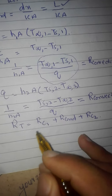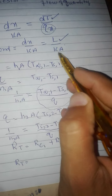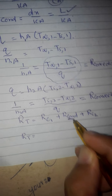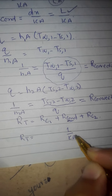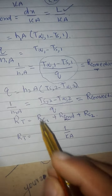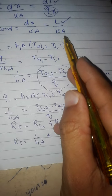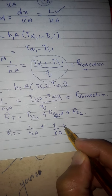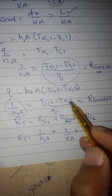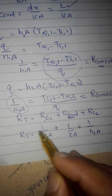The overall resistance is equal to the resistance to convection on one side plus resistance to conduction plus resistance to convection on the other side. Substituting the values: overall resistance equals 1 over H1·A plus L over K·A plus 1 over H2·A.